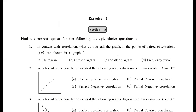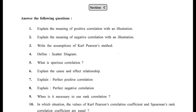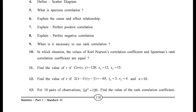There are similar sums in the exercise. Section C, Sum 13: n = 10, Σd² = 120 and the rank correlation coefficient value has to be found. Just replace values in the first formula R = 1 minus 6Σd²/[n(n²−1)] with n=10 and Σd²=120.